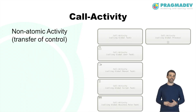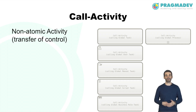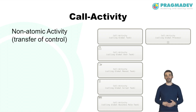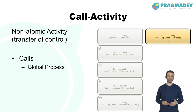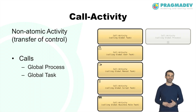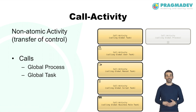A call activity identifies a point in the process where a global process or global task is used. Its activation results in the transfer of control to the called global process or task. A global process is a process that can be called from another process. A global task can be reused across different processes and can be an abstract, user, manual, script, or business rule task.